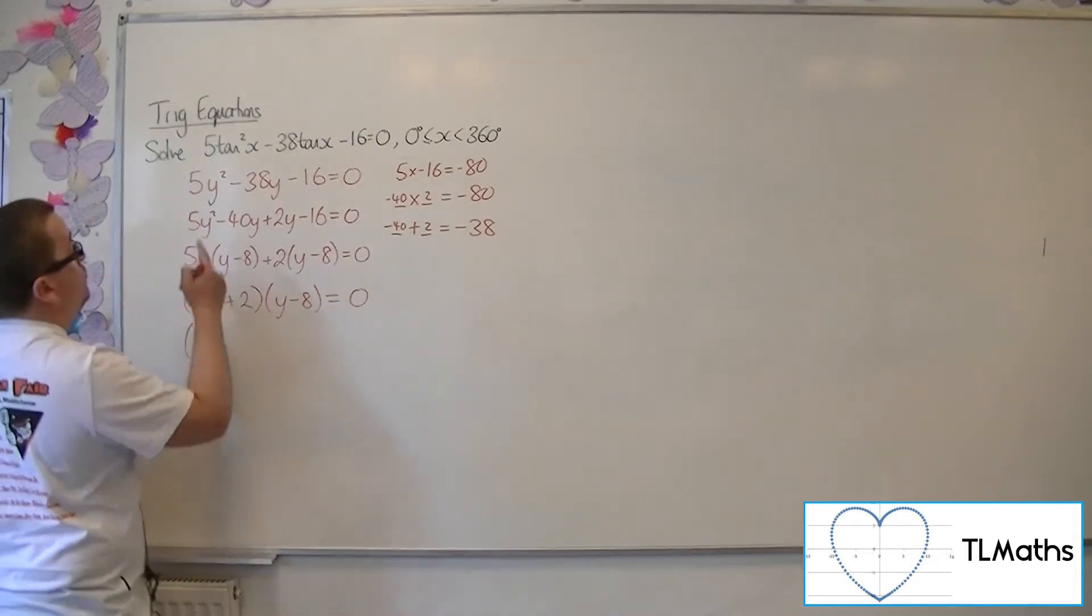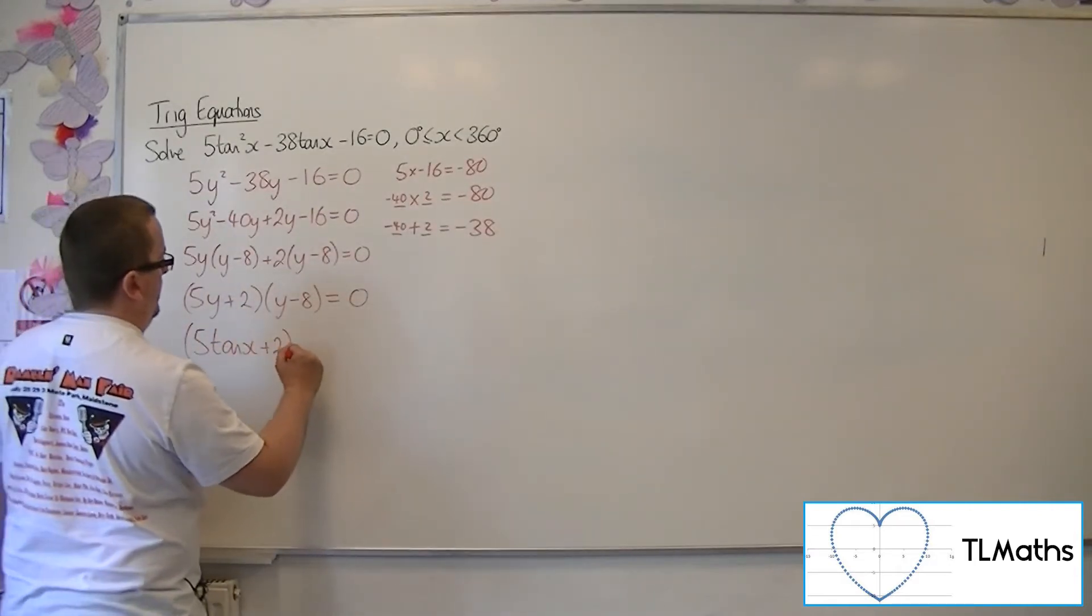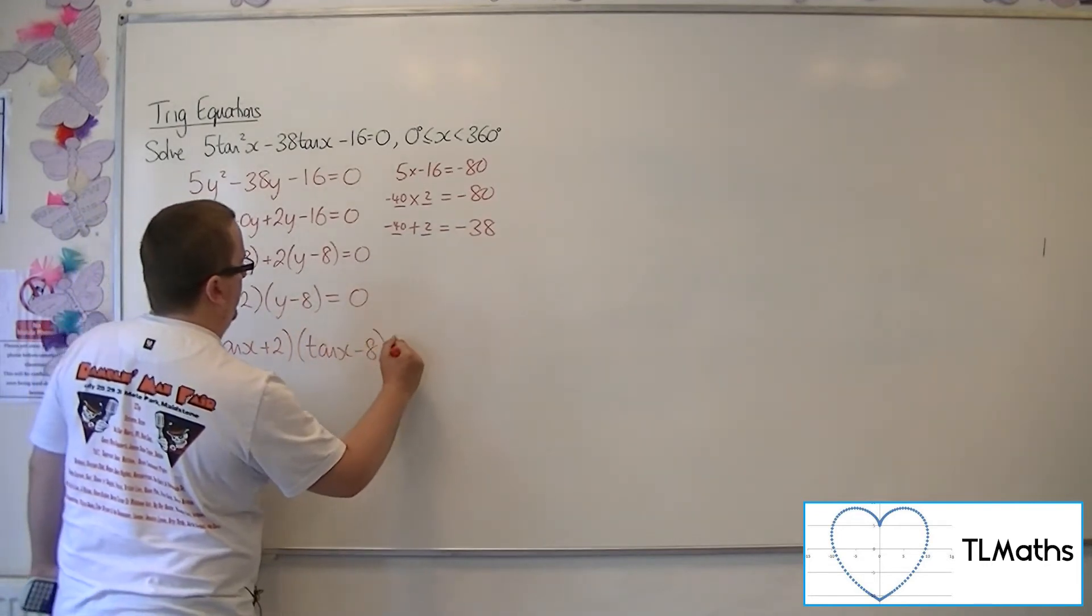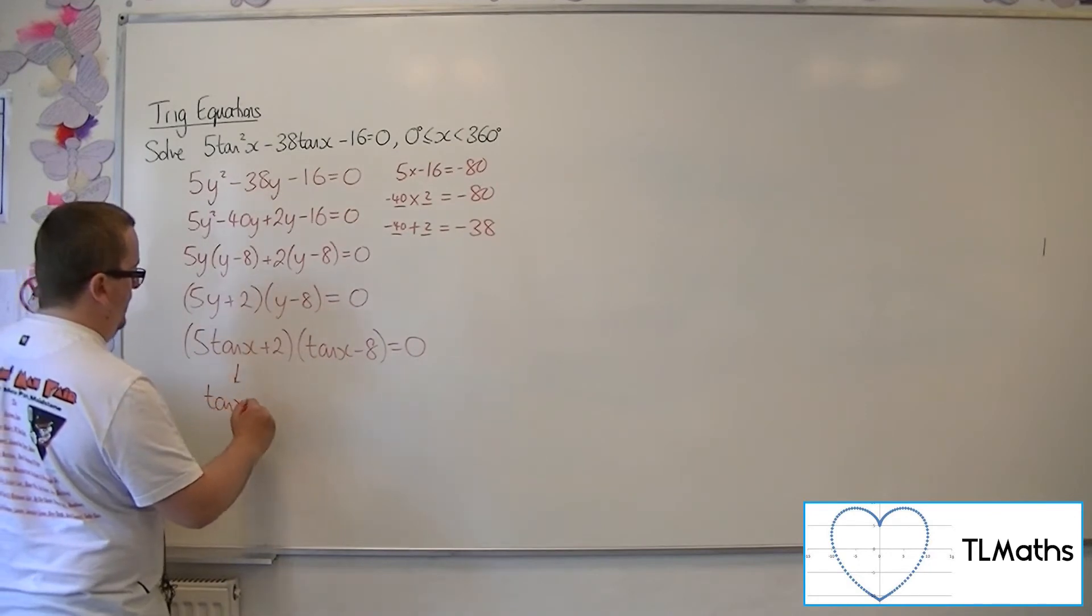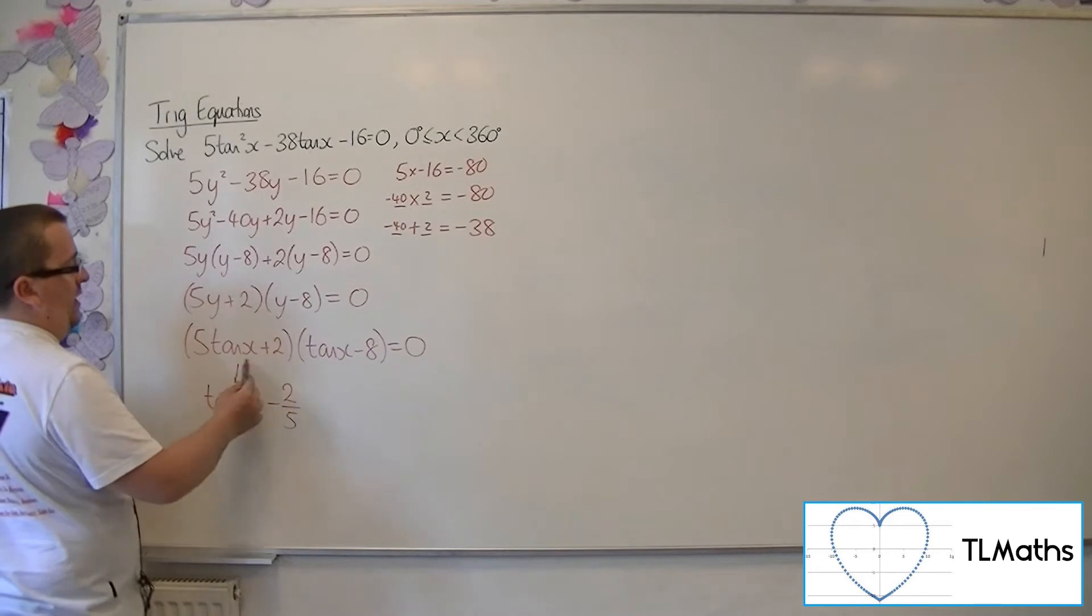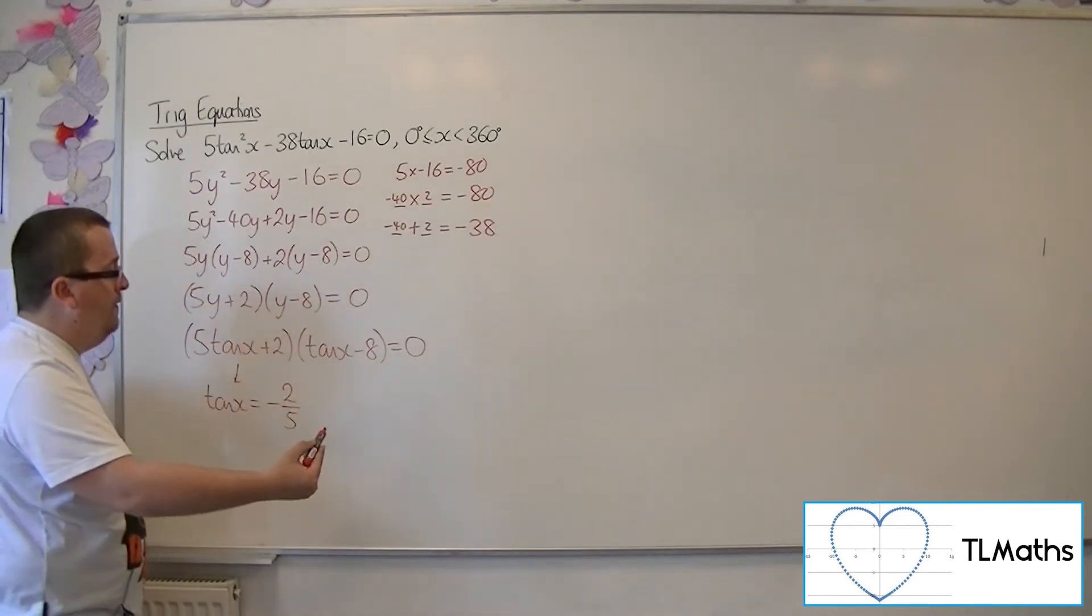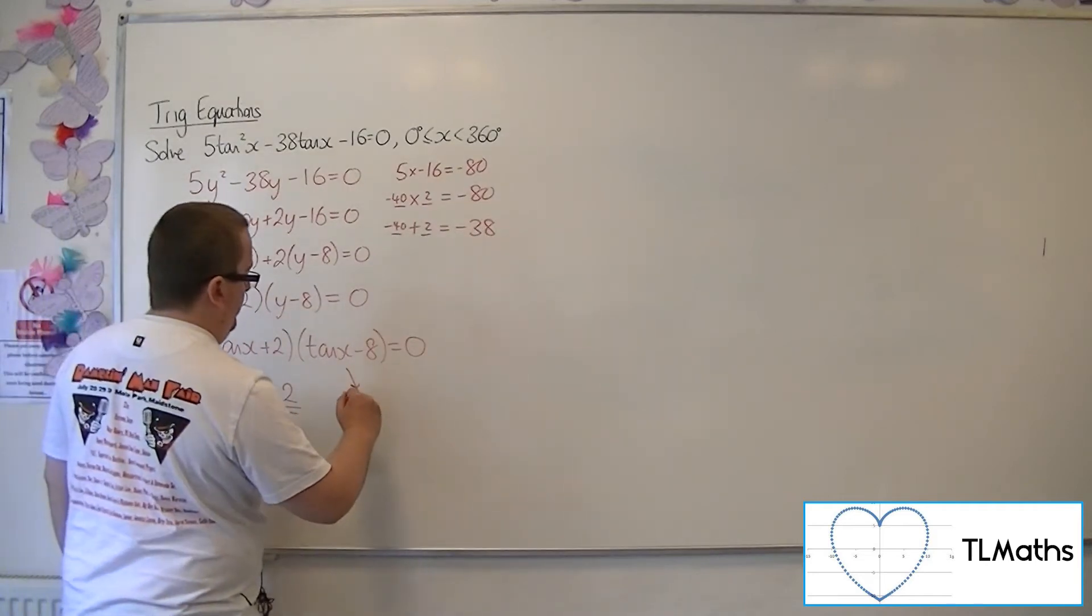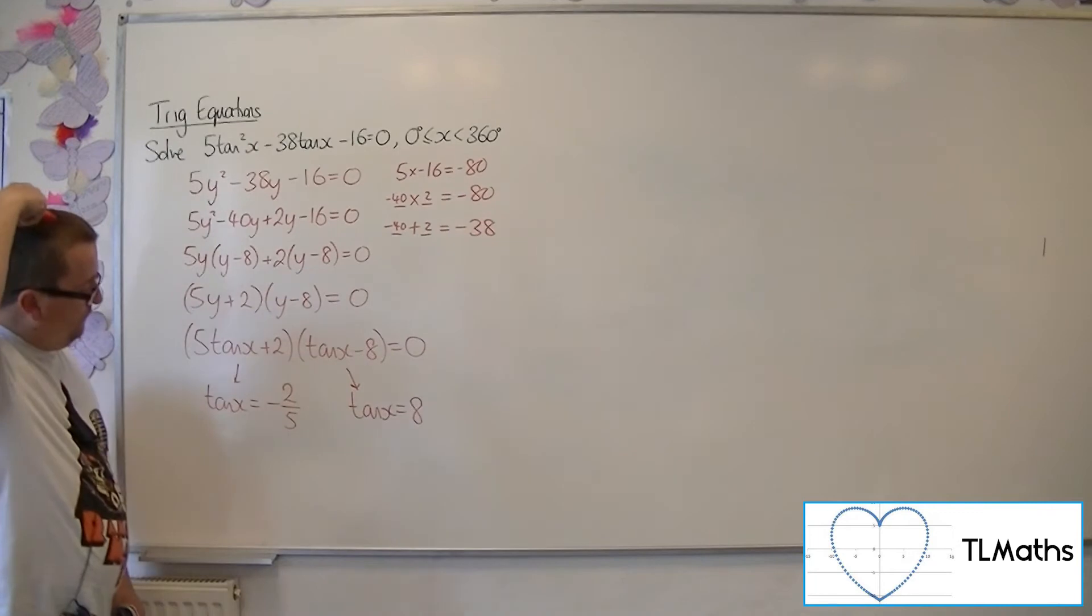And so the original problem factorises to 5 tan x plus 2 times tan x minus 8 equals 0. So either tan x is equal to minus 2 fifths, so putting that one equal to 0, taking 2 from both sides, dividing both sides by 5, or tan x is equal to 8.